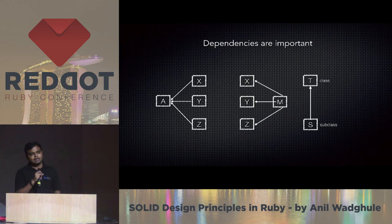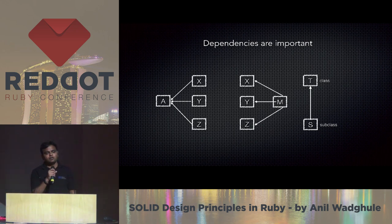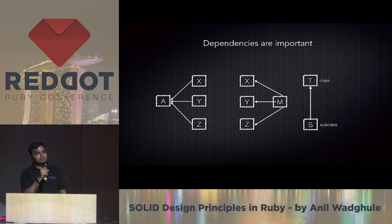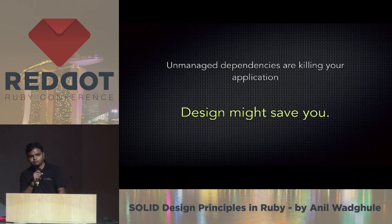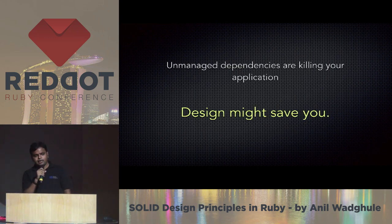In this diagram, A is dependent on X, Y, Z; X, Y, Z depend on M; S is a subclass of T. All these are dependencies, and if you don't manage these dependencies well in your application, it is going to hurt in the future. Unmanaged dependencies are killing your application and good design might save you.